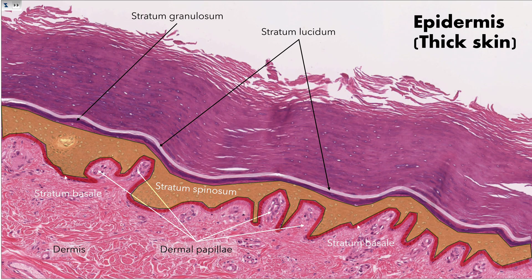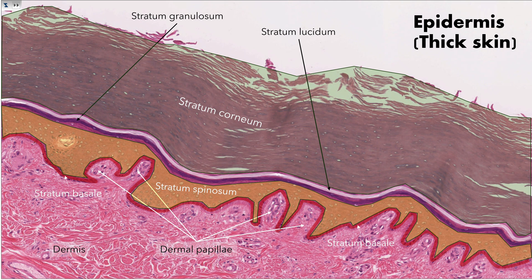The outermost layer of the integument is the stratum corneum. In thick skin, the stratum corneum will be approximately 50 cell layers thick, while in thin skin it is only 20 cell layers thick.